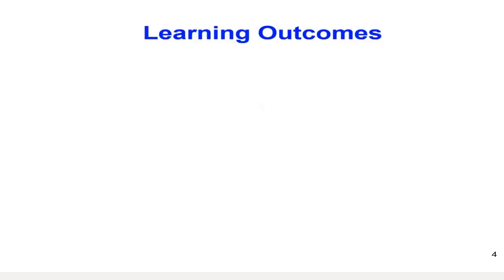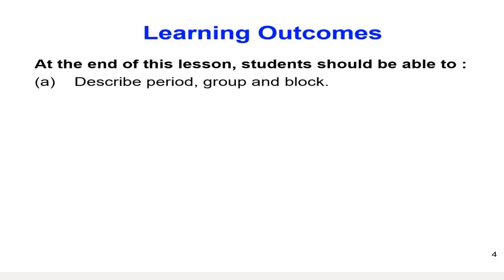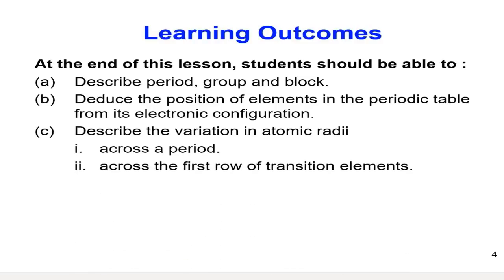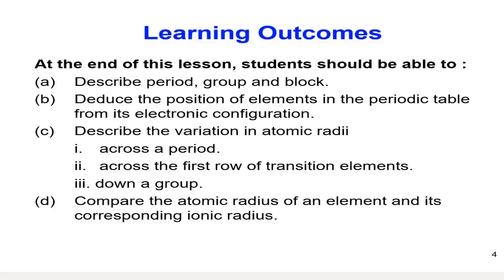There are five learning outcomes for the first hour of this lecture. At the end of this lecture, you should be able to describe period, group, and block; to deduce the position of elements in the periodic table from its electronic configuration; to describe the variation in atomic radii across a period, across the first row of transition elements, and down a group; and to compare the atomic radius of an element and its corresponding ionic radius.